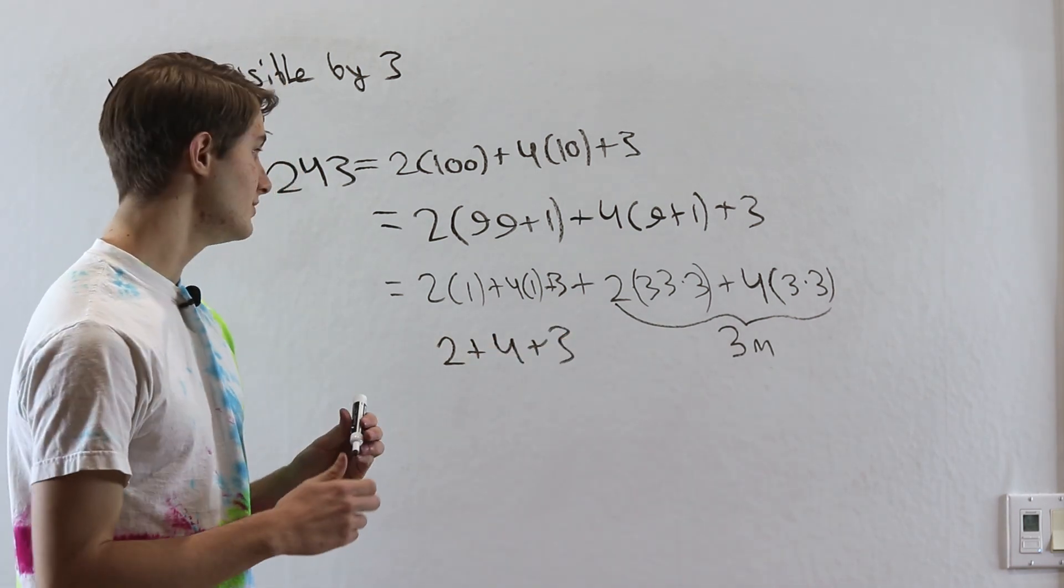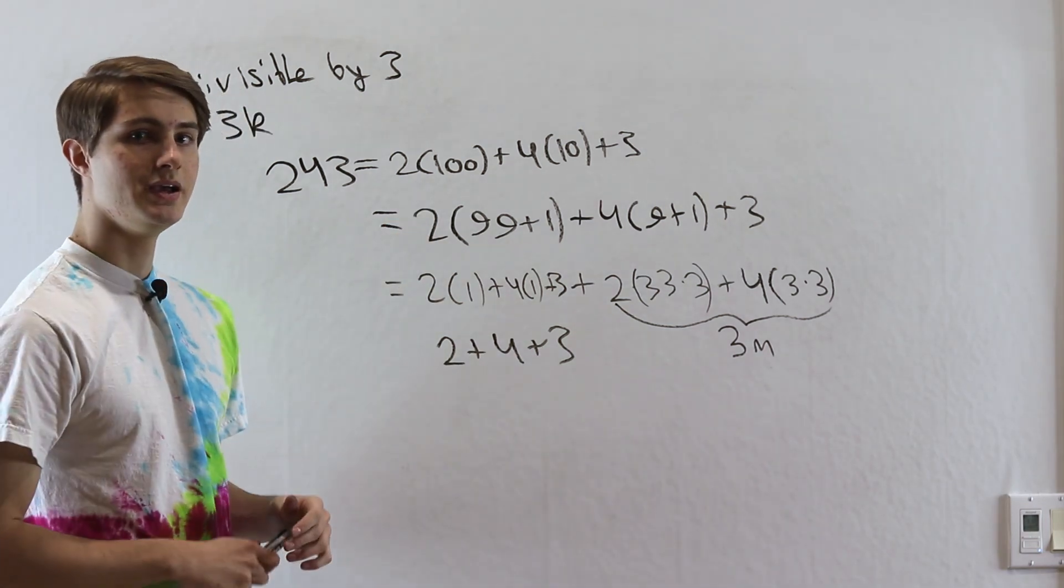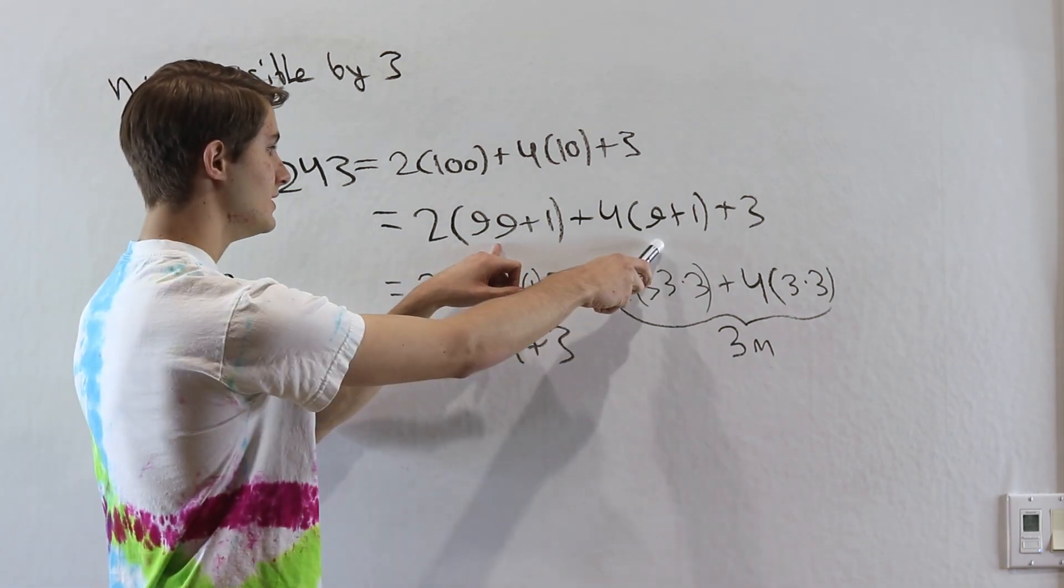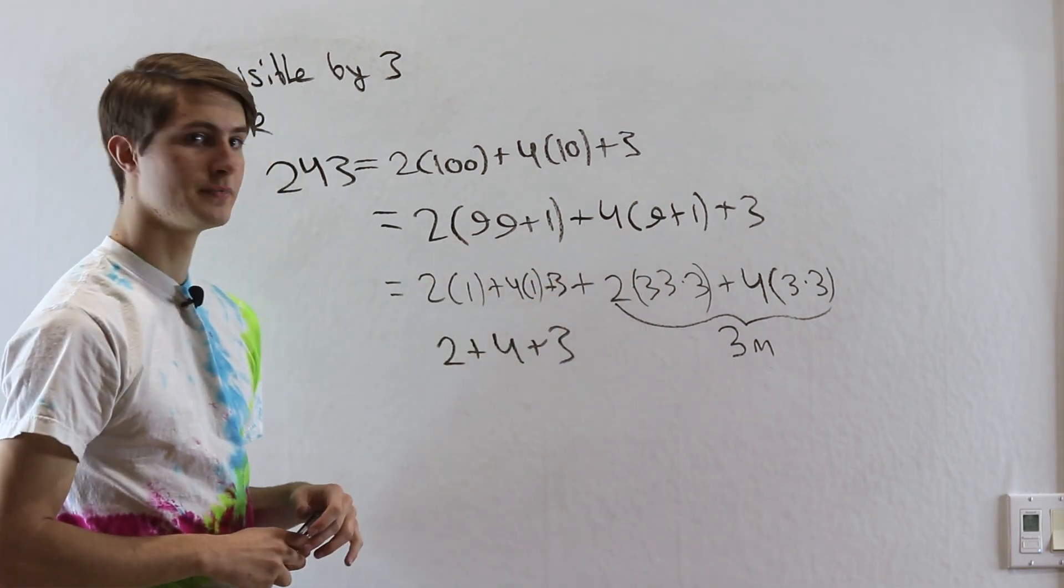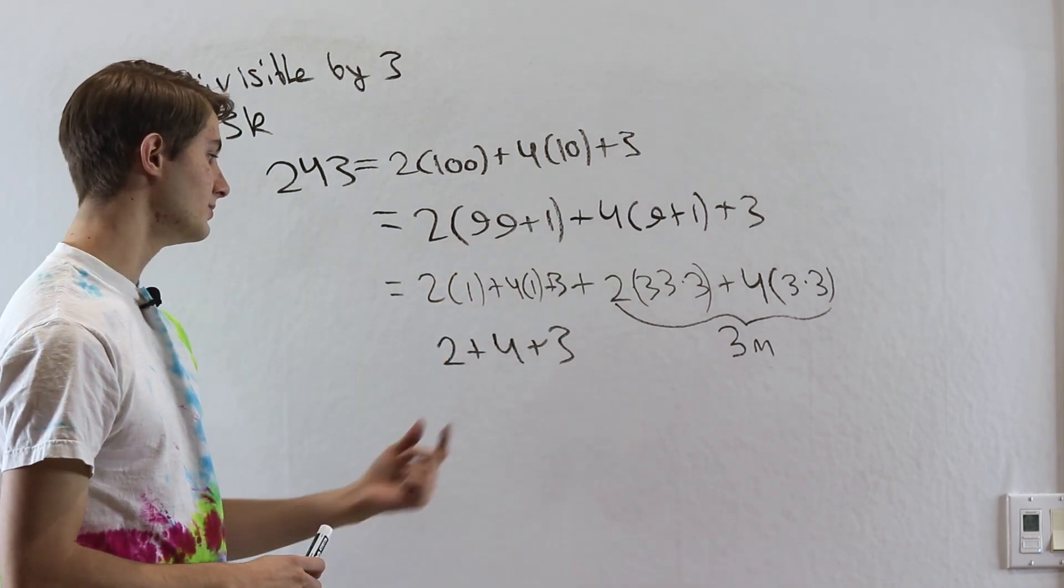And the reason that we're able to do this is that each digit represents a multiple of 10. And every multiple of 10 is going to be a multiple of 3 plus 1. The multiples of 3, we don't really care. We just care about that plus 1. So we can add the digits.